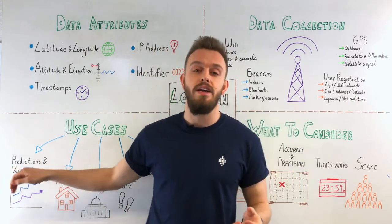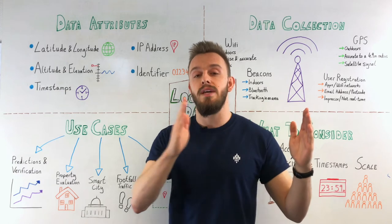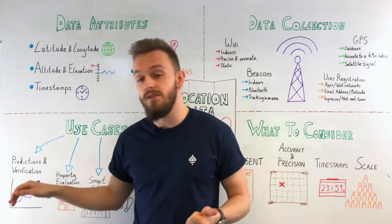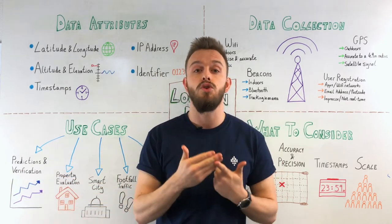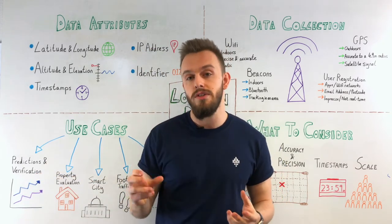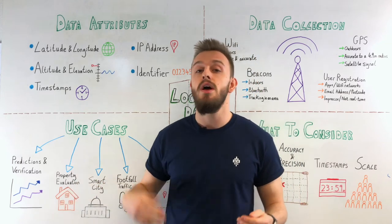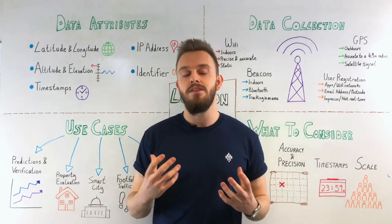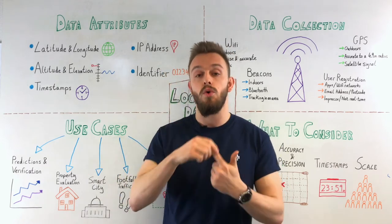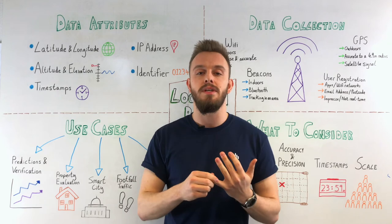Looking at things like predictions and verifications, it can be very helpful to have up-to-date data, but it's also useful to have timestamped data so you can track behaviour or trends over time. For predictions, this could be things in finance like KPIs or the potential growth of a business. And when it comes to verification, this is often used for things like insurance to verify the specific details of a claim. Moving on to property evaluation — people who want to invest in retail need to know things like demographic movements, neighbourhood movement trends, foot traffic, automobile traffic, or even how local businesses are performing.